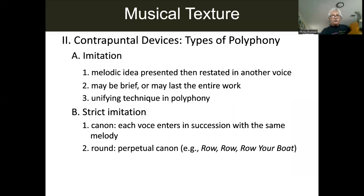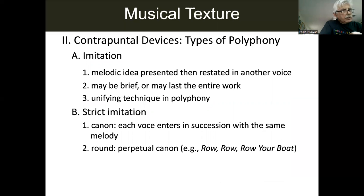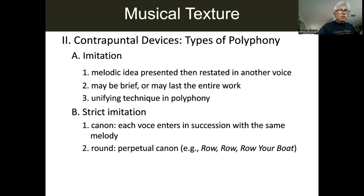Returning to imitation and strict imitation — going back to this little minuet by Bach, we started with an imitation. Strict imitation would mean that if the first line skips down a fifth, then the imitation would also skip down a fifth. But it doesn't — so if it was strict, it would sound like this. That would be strict imitation, but Bach doesn't have strict imitation.